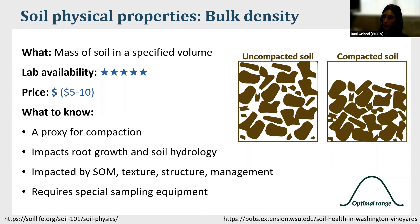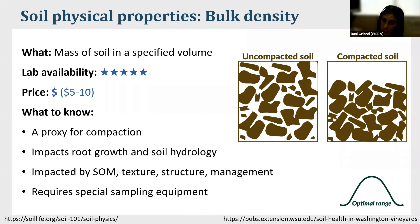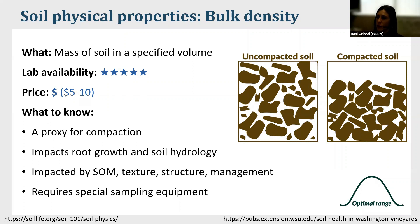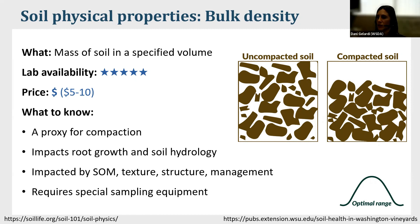Bulk density is a measure of the mass of soil in a specified volume and is really a proxy for compaction. It requires specialized sampling equipment and can be intensive to measure. You can also measure bulk density with resistance penetrometers in the field — conservation districts may have one available so you don't need to buy your own. You'll probably notice much denser soil in your furrows than in your crop rows. More soil organic matter will impact your bulk density, so there are ways to improve it over time, but there are also inherent limitations from texture and structure.